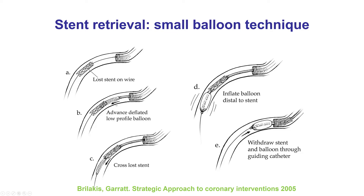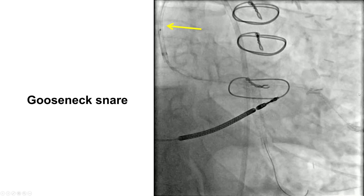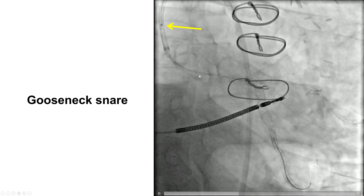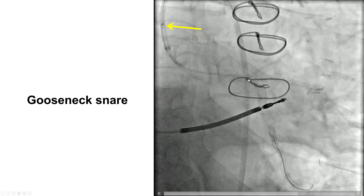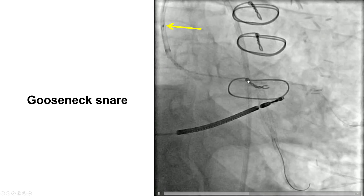How can we take it out? The simplest technique is the small balloon technique, in which a small balloon is advanced through the stent, inflated distally, and pulled back, hopefully pulling the lost stent into the guide catheter. Another option is to use a snare to grab the stent and remove it, sometimes together with the guide wire. In this particular case, the challenge was that the stent was located all the way from the left main into the aorta, so we clearly could not leave it there or deploy or crush it. Retrieval was therefore important.